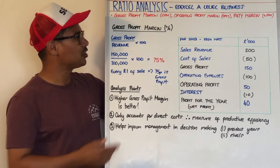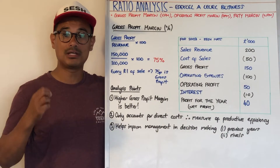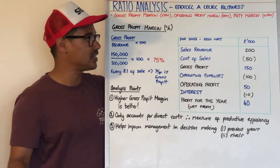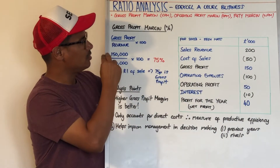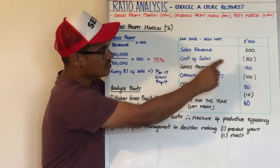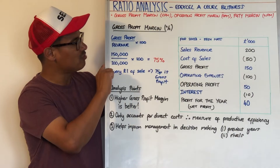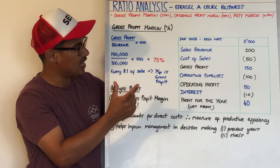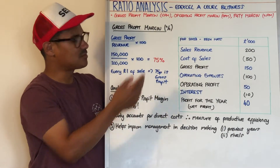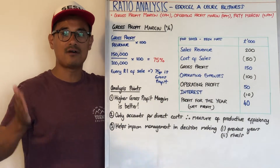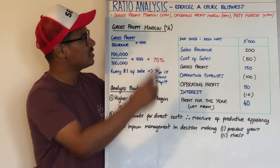The first one is gross profit margin, GPM. The formula is gross profit divided by revenue, times by 100, because it's expressed as a percentage. Looking at a statement of comprehensive income, the gross profit is £150,000. We divide that by the revenue — the sales revenue — which is £200,000, times by 100. That comes to 75%, and margins are always expressed as percentages. So the gross profit margin is 75%.